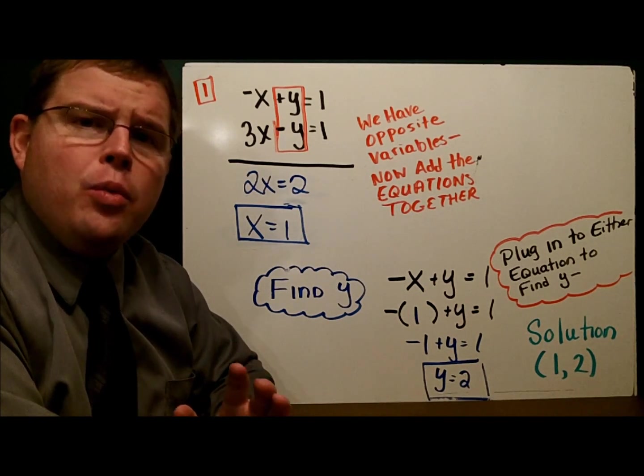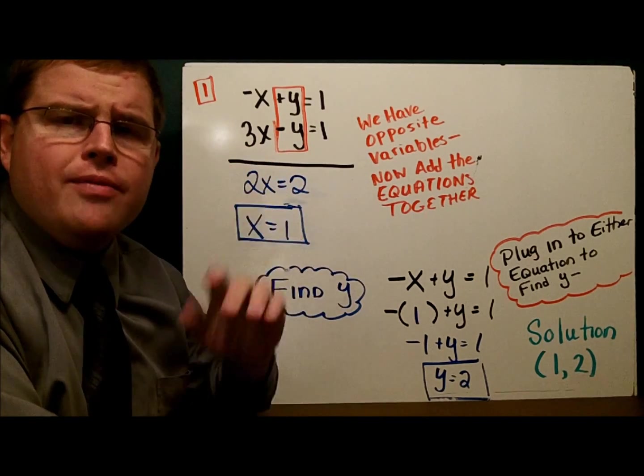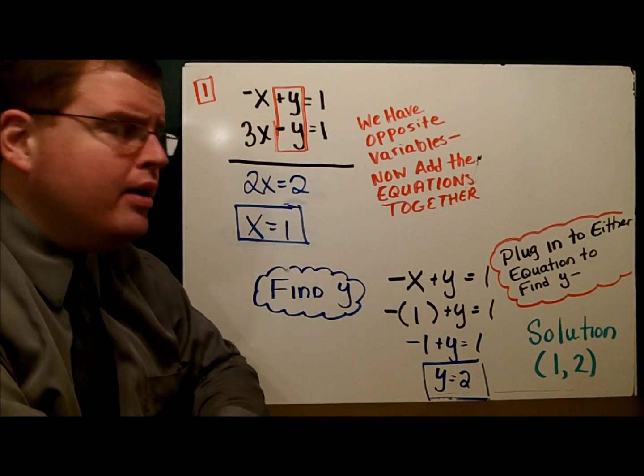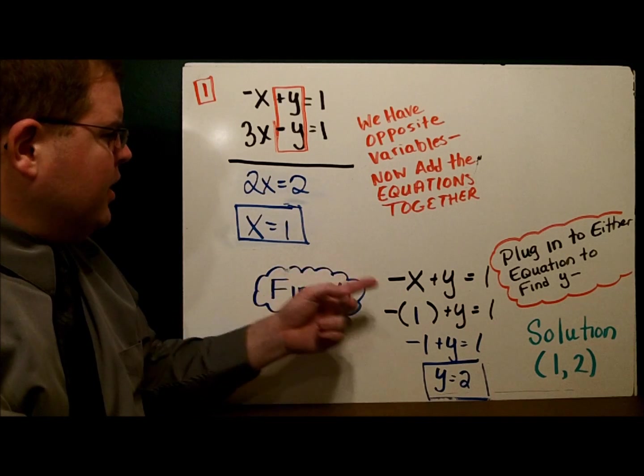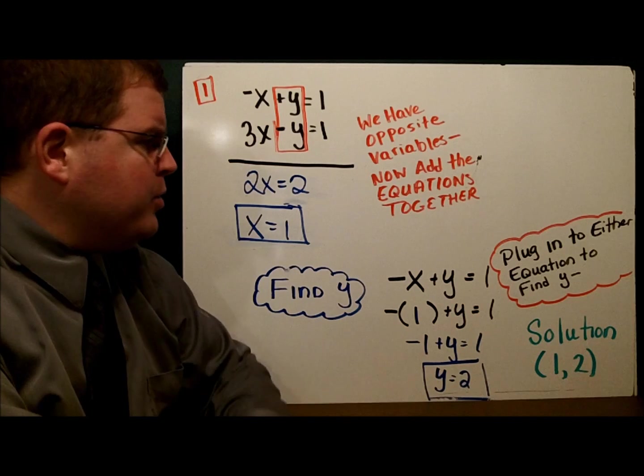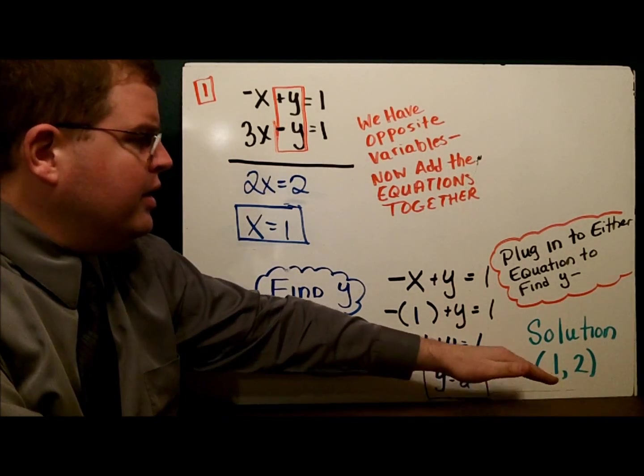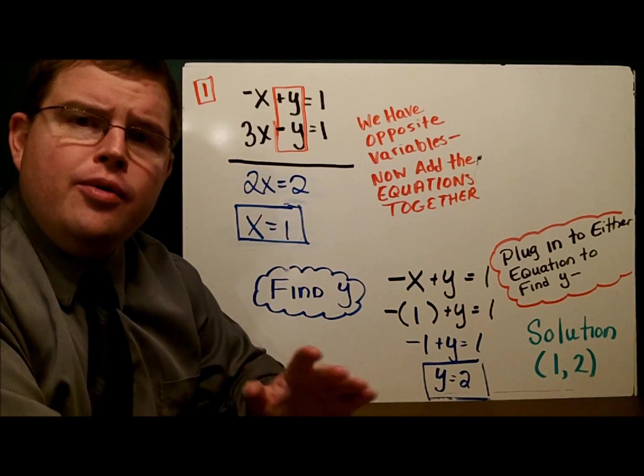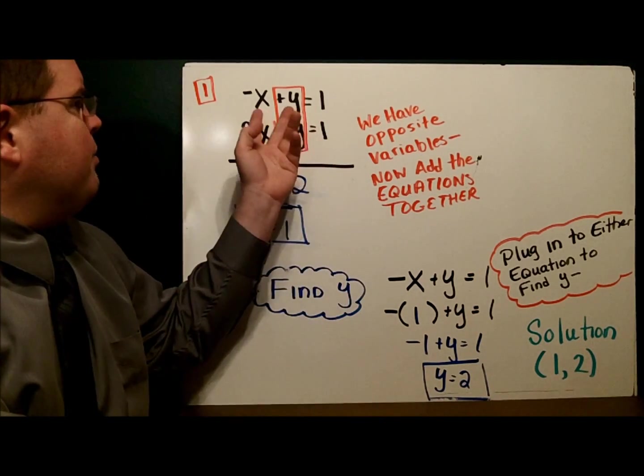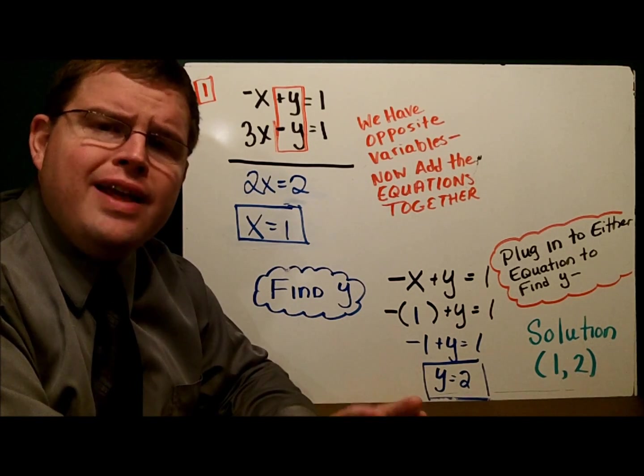Now I need to find the y value that goes with this. In order to find the y value I choose either one of the original equations, it doesn't matter which one. I happen to choose negative x plus y equals 1. Plug that 1 in there. Negative 1 plus y equals 1 and therefore y equals 2. So the solution to this system is (1, 2). Remember, x equals 1 and y equals 2 are the only two numbers I can plug into both of these equations so that they're both true at the same time.